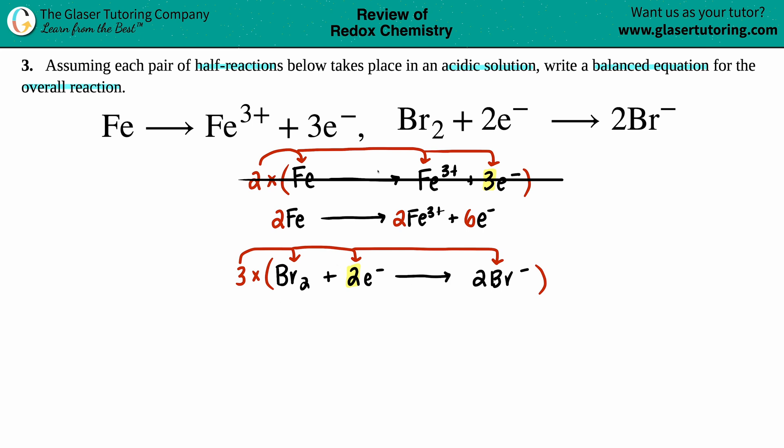Let's do the same thing for the bottom one. Right now I have three Br₂ plus now I have six electrons because three times two is six, yield sign, and now I have six Br⁻. Get rid of this equation, goodbye, never to see it again.